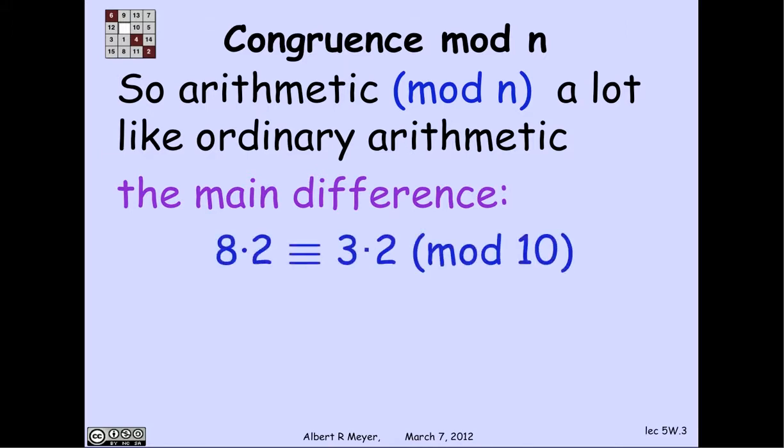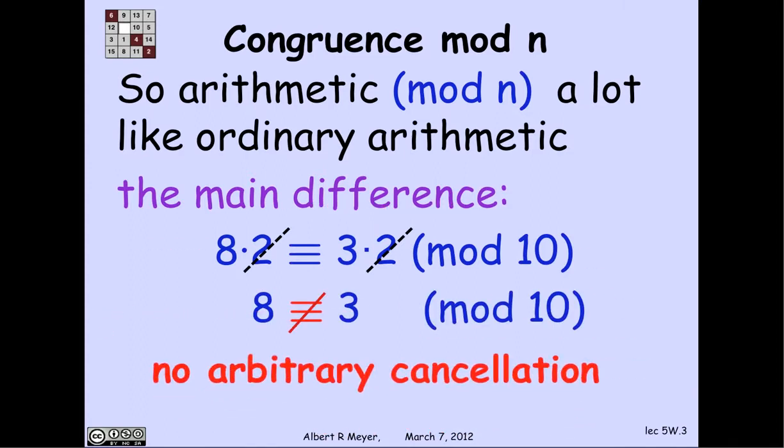Let's look at this one. 8 times 2 is 16, which means it's congruent to 6 mod 10, which is the same as 3 times 2. So 8·2 ≡ 3·2 (mod 10). And you'd be tempted, maybe, to cancel the twos. And what happens then? Well, then you could discover that you think that 8 is congruent to 3 mod 10, which it ain't.